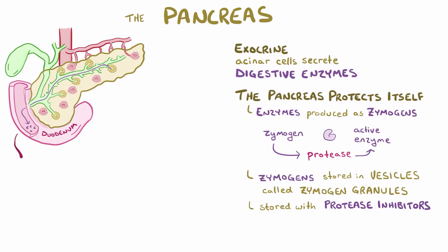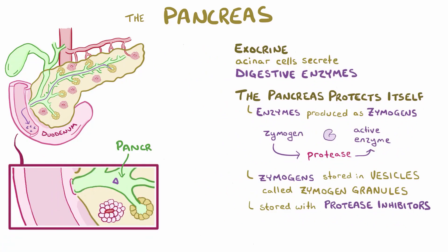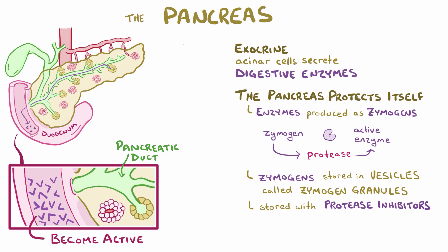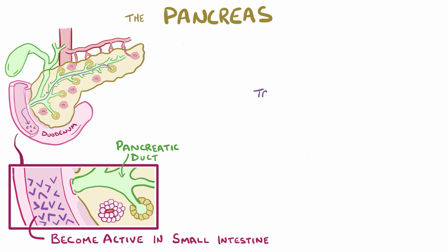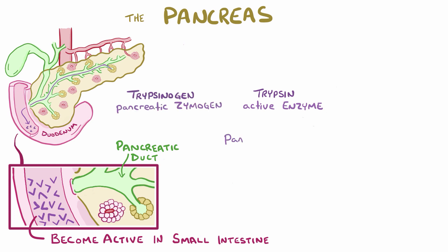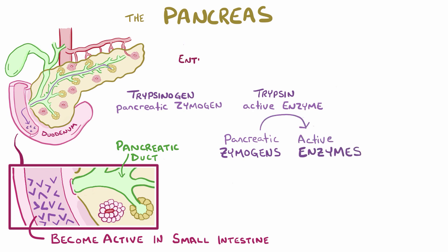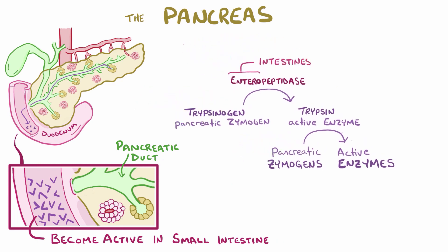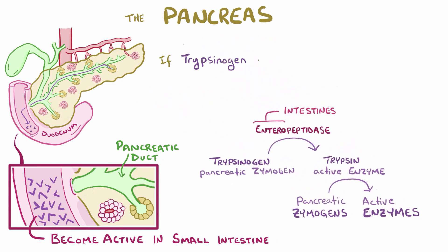To digest a meal, these zymogens are released into the pancreatic duct and delivered to the small intestine where they're activated by the protease trypsin. Trypsin is a pancreatic digestive enzyme produced as the zymogen trypsinogen. Normally, trypsinogen isn't activated until it's cleaved by protease enteropeptidase, which is found in the duodenum. But if trypsinogen and these zymogens become activated too early, it can cause acute pancreatitis.